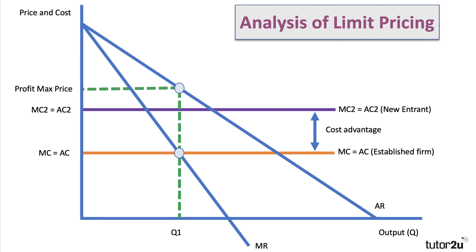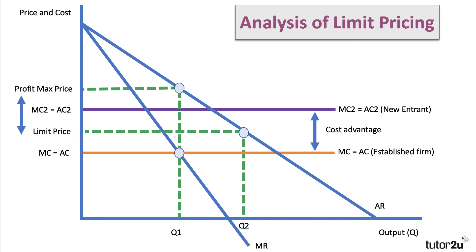Limit pricing means a short-term departure from profit maximization. On the diagram, the purple lines are above the orange line — the existing firm has lower costs than the new entrant. They could charge a lower limit price, sell more output at Q2, making less profit, but pricing below the costs of a new entrant makes life tough for firms trying to break in. If rivals don't enter, the firm can revert to its original profit-maximizing equilibrium.